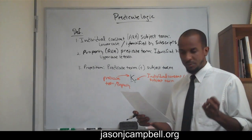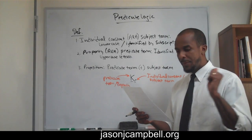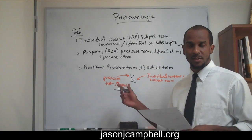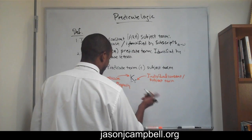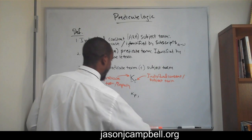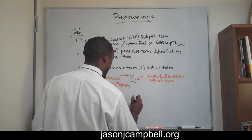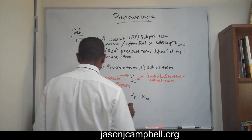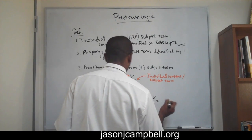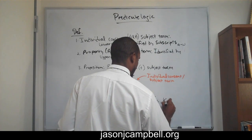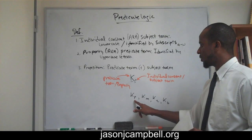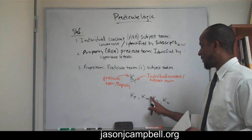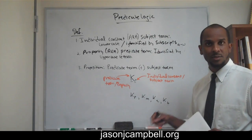Now imagine we wanted to say any of the following claims: Peter has knowledge, Mary has knowledge, Tim has knowledge, Bill has knowledge. All of those would be symbolized in similar manners — the subject term followed by the predicate term. Subject Mary, predicate having knowledge. Subject Tim, predicate having knowledge. Subject Bill, predicate having knowledge. And so on.